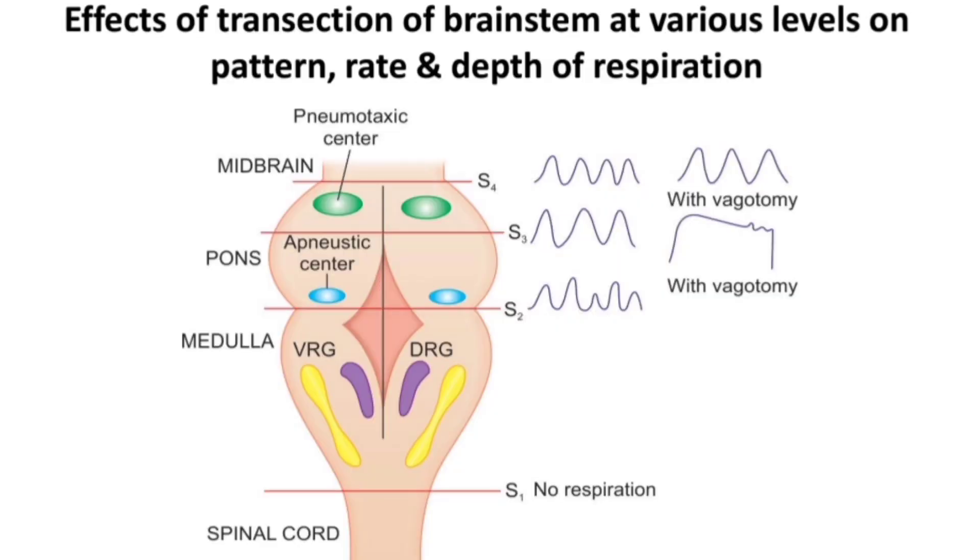Applied aspects — lesion classification: First, lesions below the medulla result in inevitable death, as the pre-Bötzinger complex circuit is disrupted. Examples include hanging or direct spinal cord injury, such as the case of cricketer Phil Hughes, who sustained a fatal direct spinal cord injury.